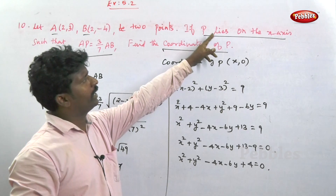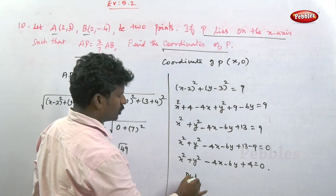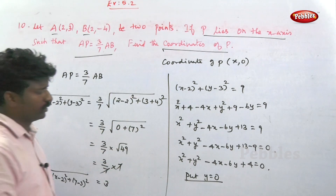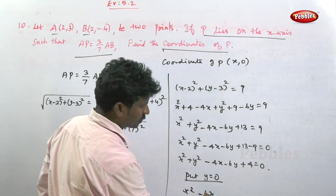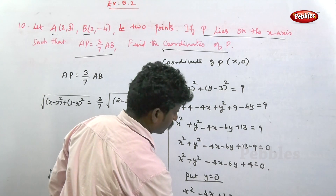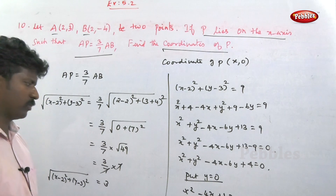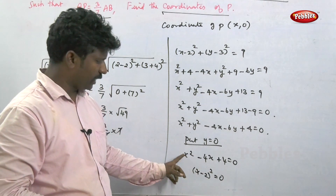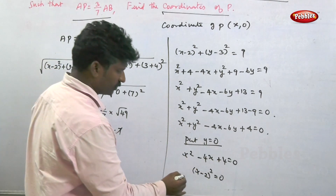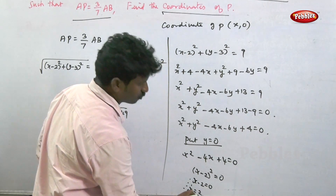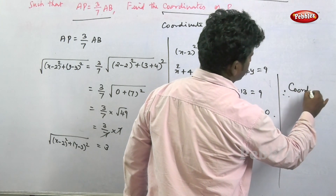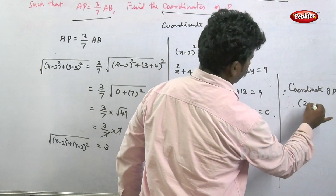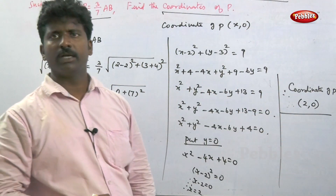Since P lies on the x-axis, y equals 0. Substituting y equals 0: x squared minus 4x plus 4 equals 0. This factors as (x minus 2) squared equals 0. Therefore x minus 2 equals 0, so x equals 2. Therefore the coordinate of P is (2, 0). That is the answer.